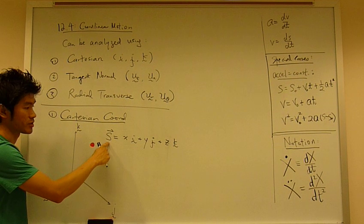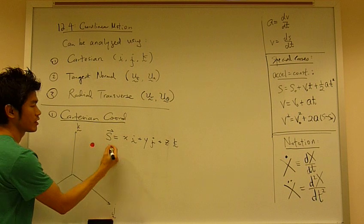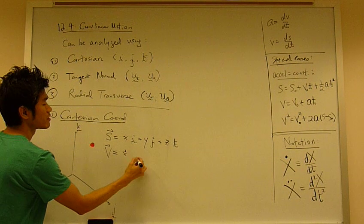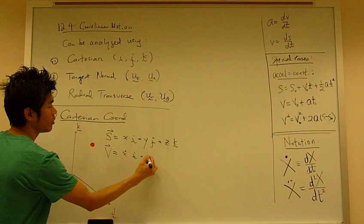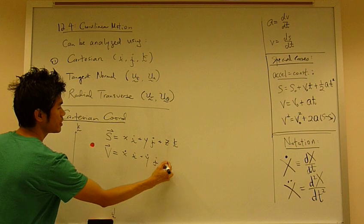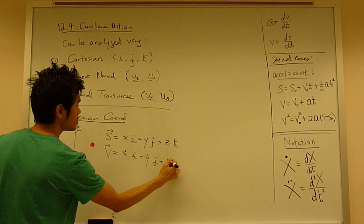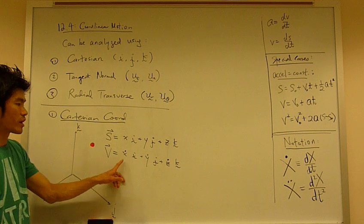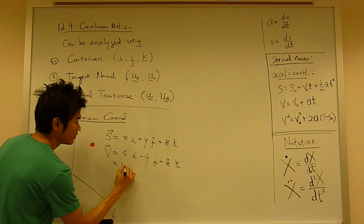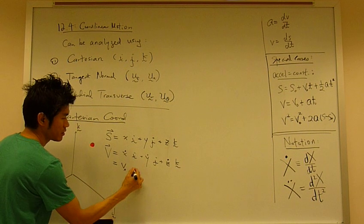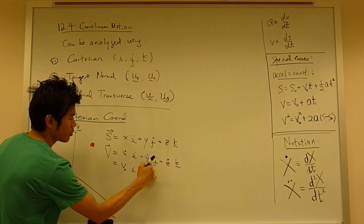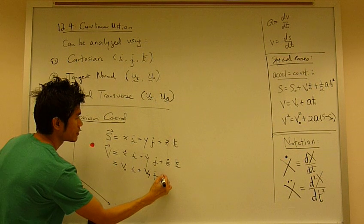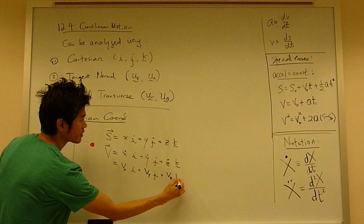If you take a derivative of position with respect to time, you get velocity, v equals simply x-dot i, plus y-dot j, plus z-dot k. Where x-dot is exactly equal to the x-component of velocity, y-dot is the y-component of velocity, and z-dot is the z-component of velocity.